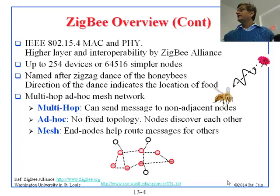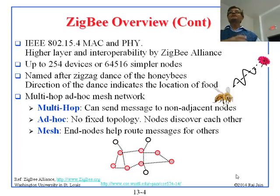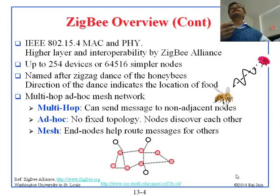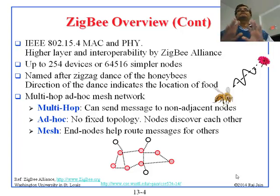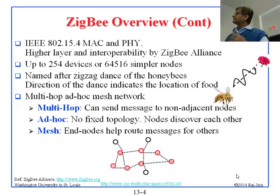Nodes discover each other. Mesh means that N nodes help route messages for others — you are not just receiving messages, you are helping others receive messages. That is why mesh has not succeeded in the real world: if we want a mesh in our community, I have to take somebody else's data and send it for them. So mesh is mostly for the military, not elsewhere.